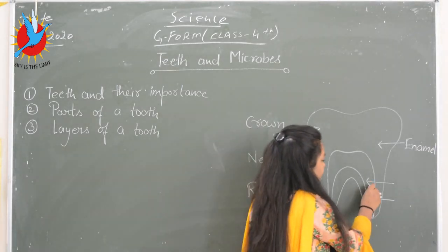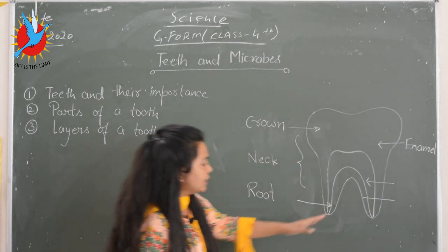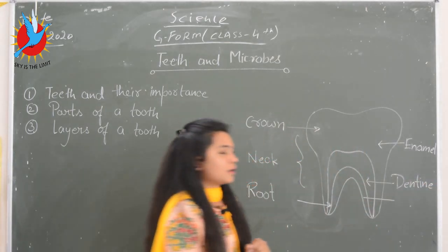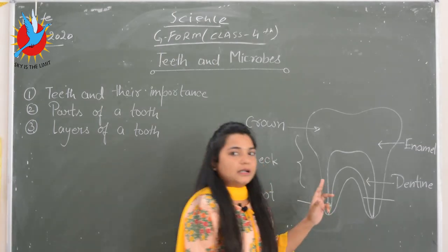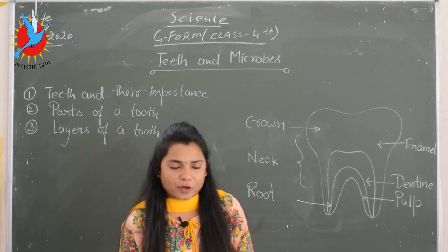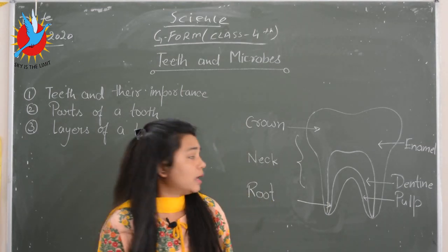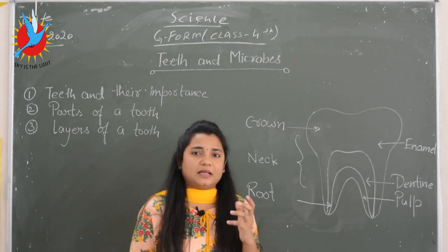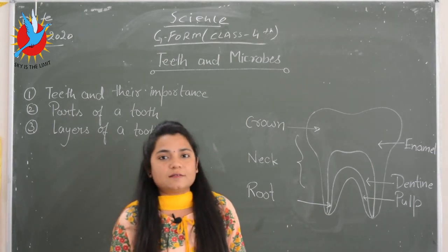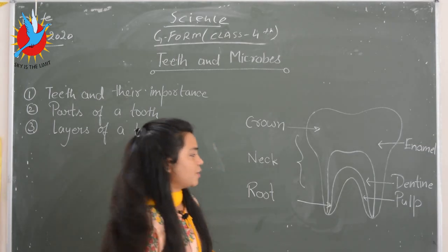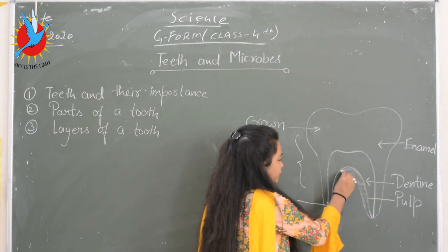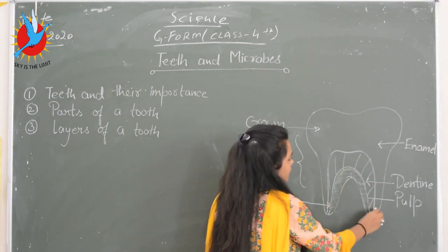The second layer is a little softer than the enamel but stronger than the lowermost layer. It is known as dentine. The third layer is known as pulp. Have you ever seen anyone eating something very cold or very hot and feeling sensations or pain in their mouth? That is called sensitivity. It happens because the pulp contains nerves and veins, which cause those sensations. So there are three layers: pulp, dentine, and enamel.